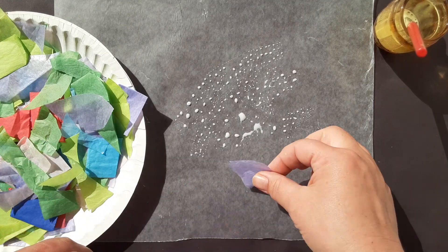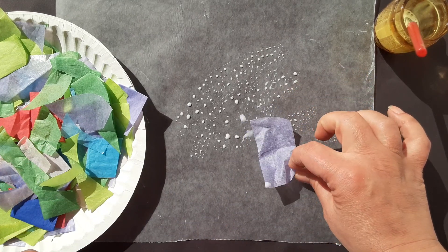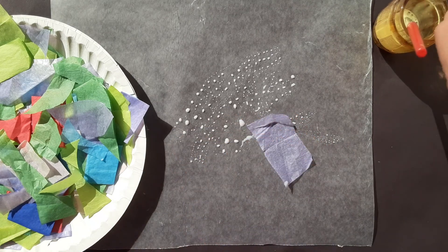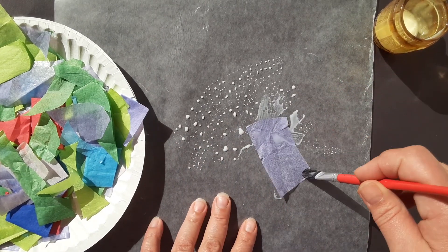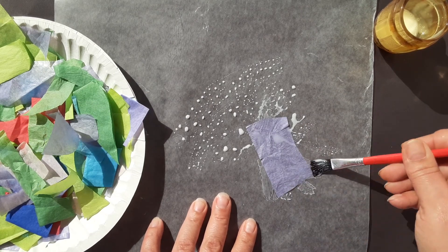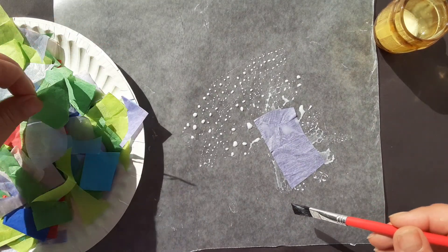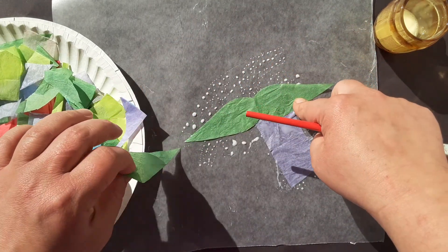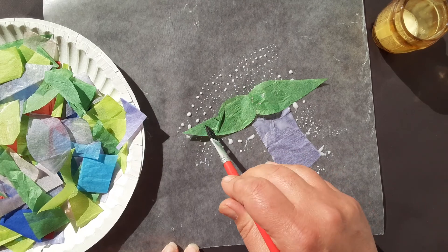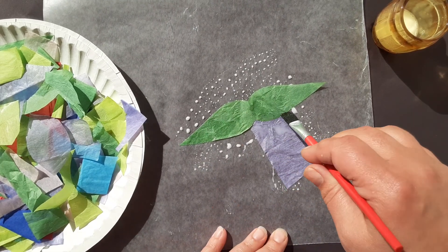You can add all different colored pieces of tissue paper on top of the glue. Use your paintbrush to make sure it stays down. Adding lots of colors will give you a pretty and interesting pattern. It's okay if they move or wrinkle.